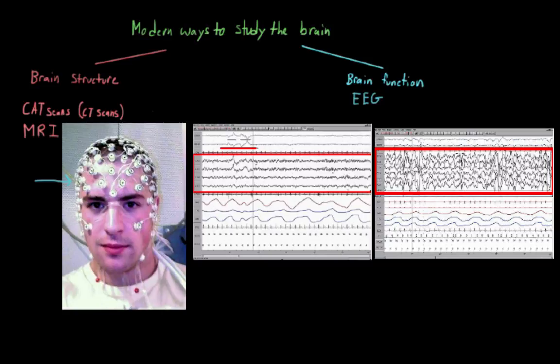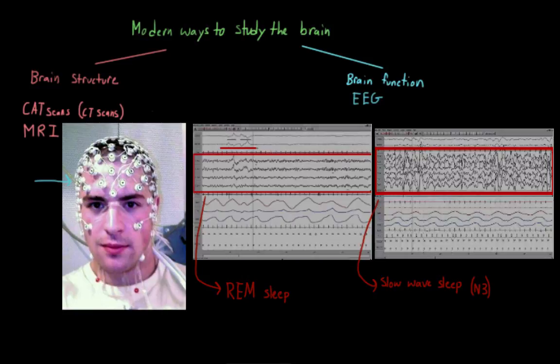While they might look kind of random to you, this is actually really meaningful for someone who knows how to read them. For example, they can tell us whether or not a person is awake or asleep, or they can identify if a person is having a seizure, and it can even tell us if people are engaged in certain cognitive tasks.